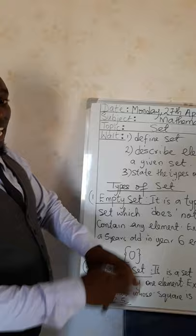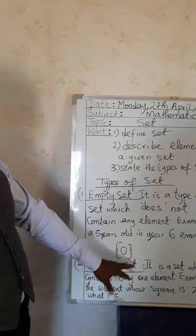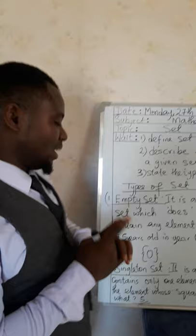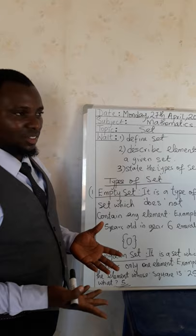Number 2: Singleton set. It is a set which contains only one element. Example: the element whose square is 25. You all know that the element whose square is 25 is 5.